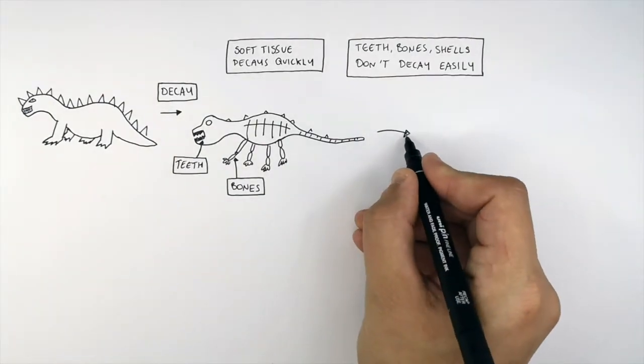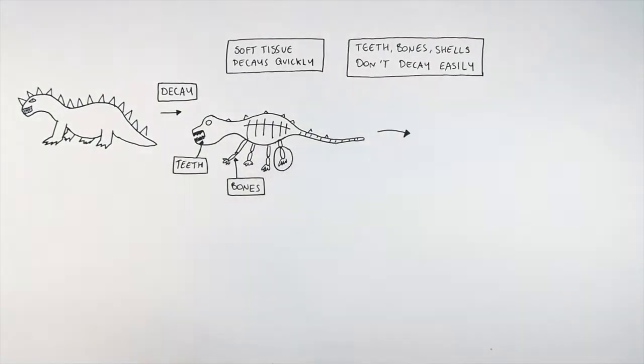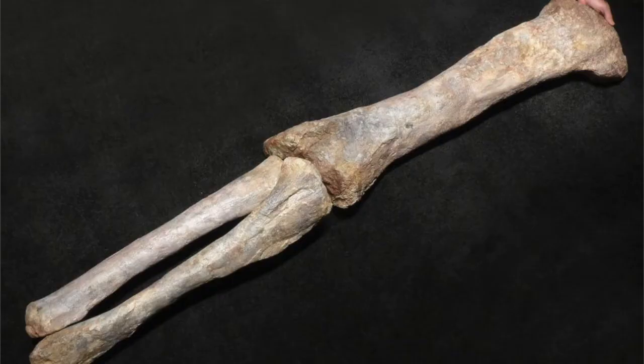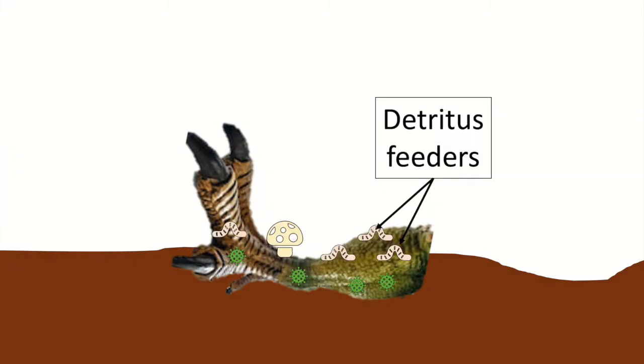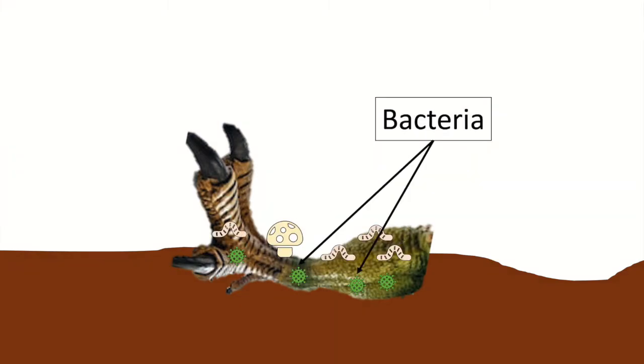We're now going to look at how this bone here became a fossil over millions of years. This here is a dinosaur, and it dies. Microorganisms such as detritus feeders, fungi, and bacteria are going to decay the soft tissue, leaving behind the hard bones. When the soft tissue is fully decayed, only the bones will remain.